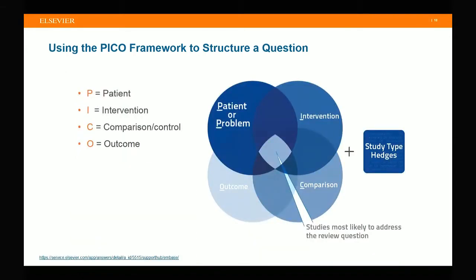When the four elements — patient, intervention, comparison, and outcome — intersect, the overlapping area represents the evidence addressed by the clinical question. Often, people apply an additional filter: study type hedges. Hedges are standardized searches, also called filters, which combine controlled vocabulary and natural words and phrases to search for frequently required concepts. Tested study hedges are often used to improve the recall of randomized controlled trials, systematic reviews, and other meta-analyses.